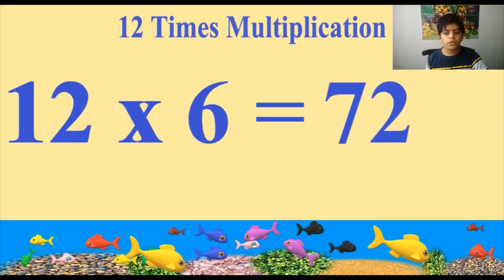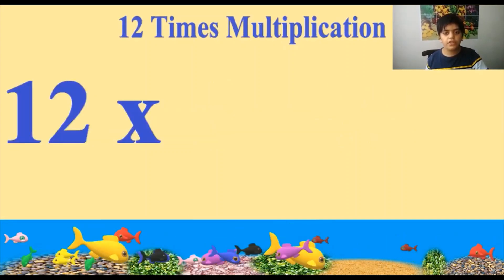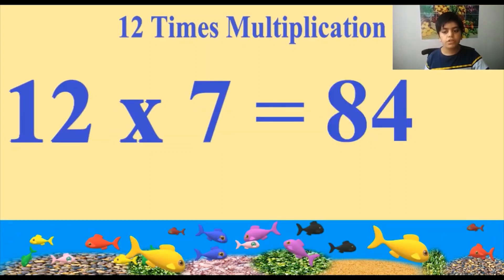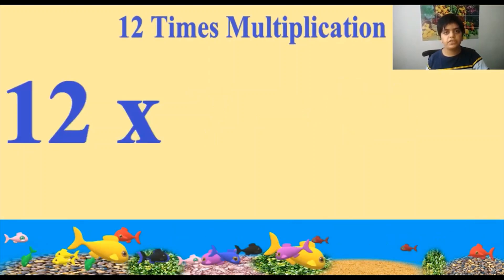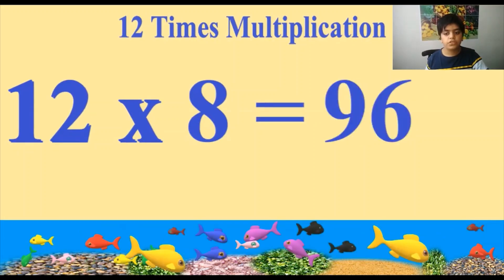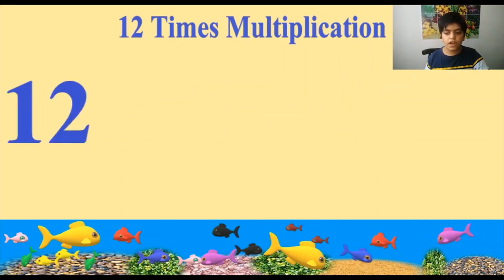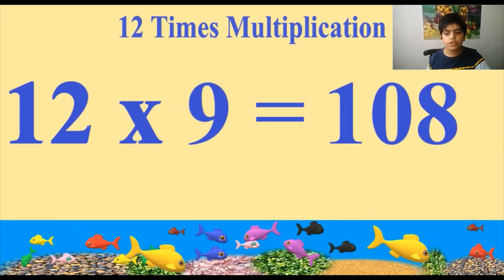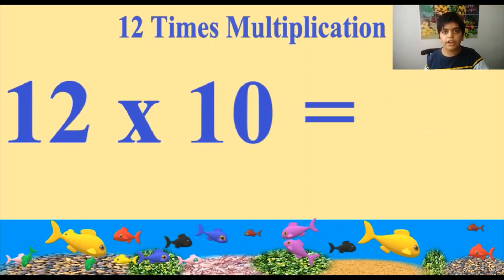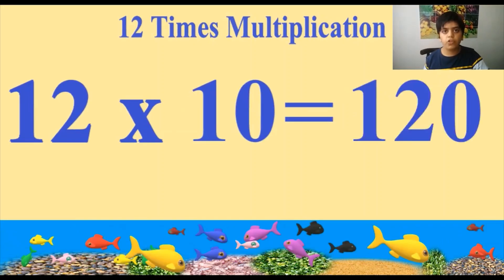Twelve sevens are eighty-four. Twelve eights are ninety-six. Twelve nines are one hundred and eight. Twelve tens are one hundred and twenty.